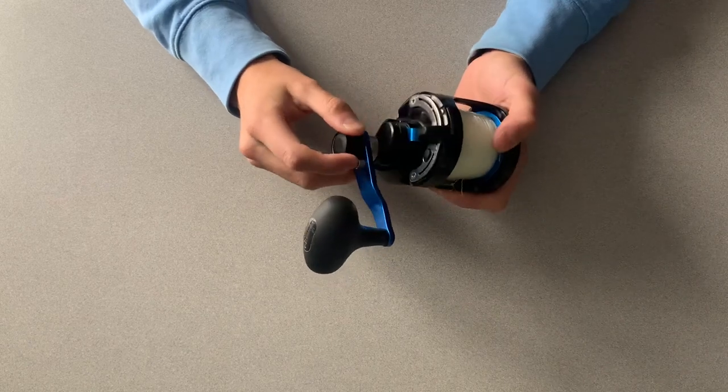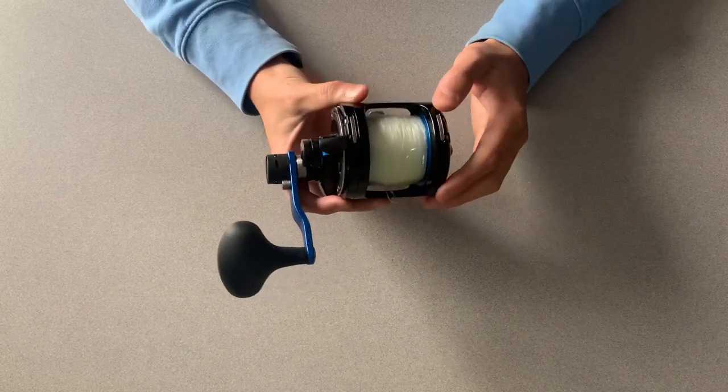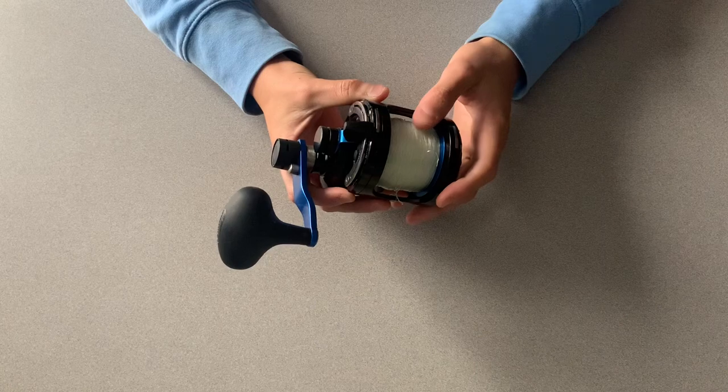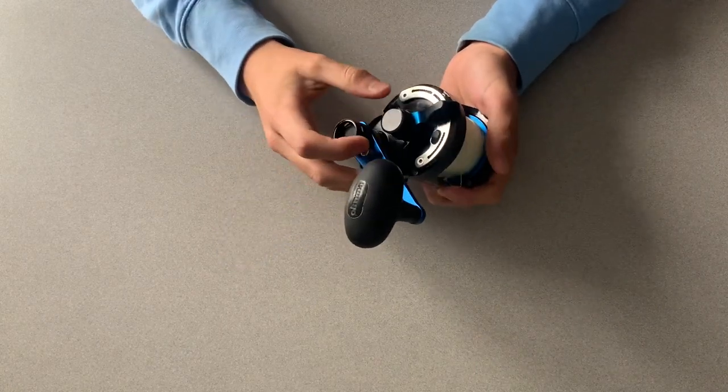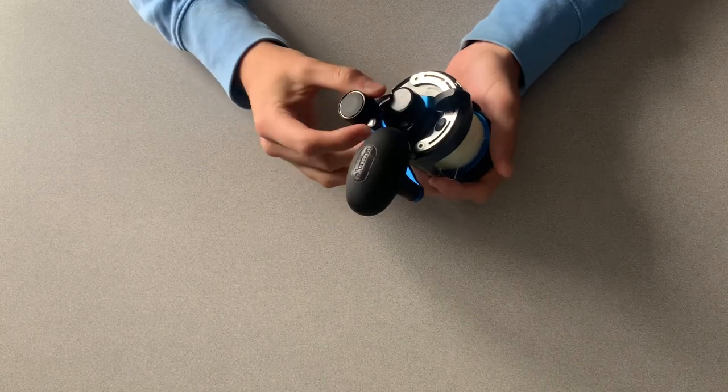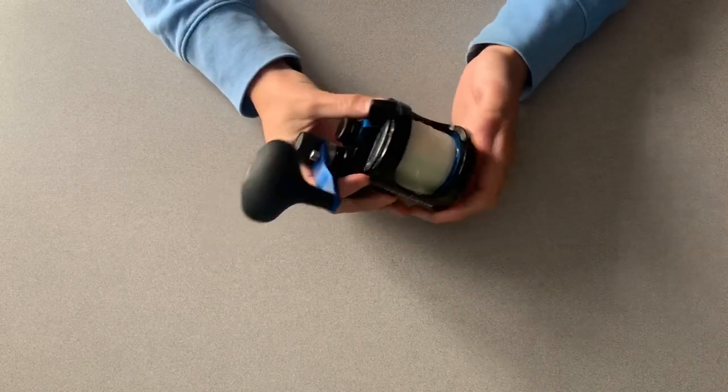Some of the fishing applications that we use it for are bottom fishing. When you're fishing for grouper, snapper, and you want to get those big fish off the bottom, you can crank it into a low gear ratio and bump up your drag, and you can get them off the bottom before they put you in a rock.